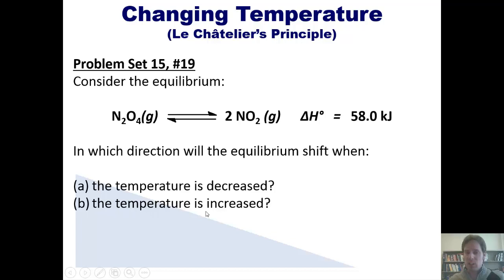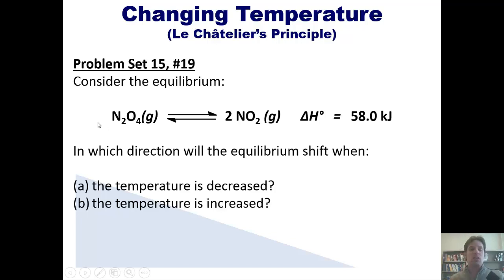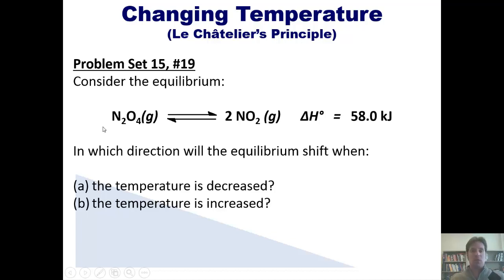Now, if the temperature is increased, increasing the temperature means I've added heat. Heat is on the left side of the reaction. So if I add heat, which is an ingredient on the left side of the reaction, it's just like increasing the amount of stuff on the left. In which direction is it going to shift to restore balance? It's going to shift to the right. This is how changing temperature affects an equilibrium reaction.